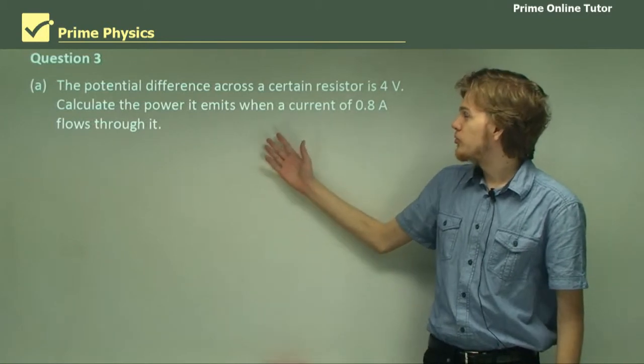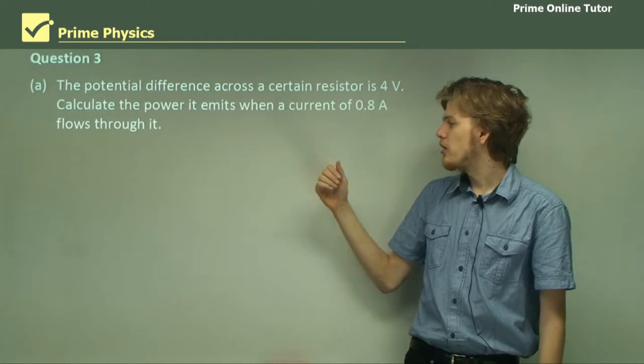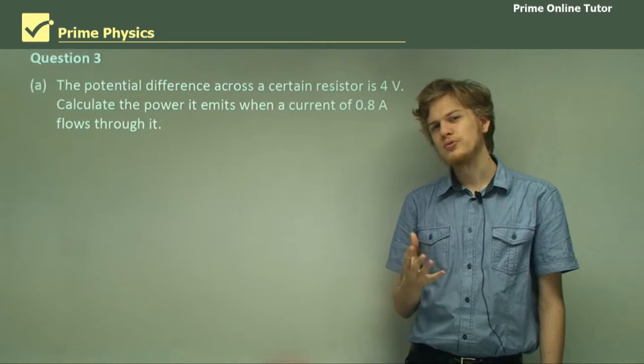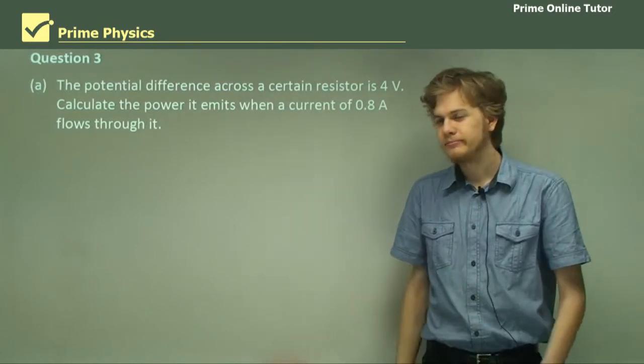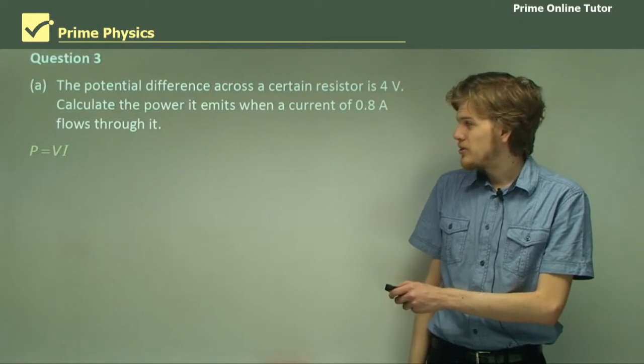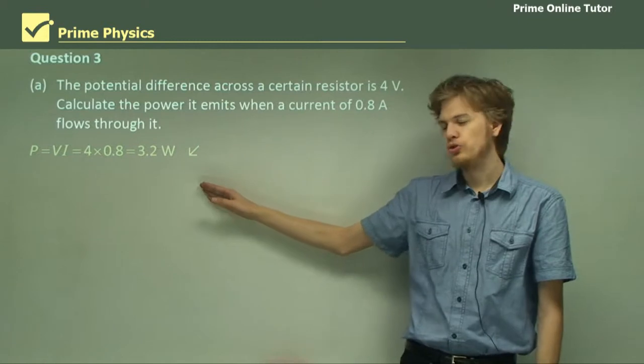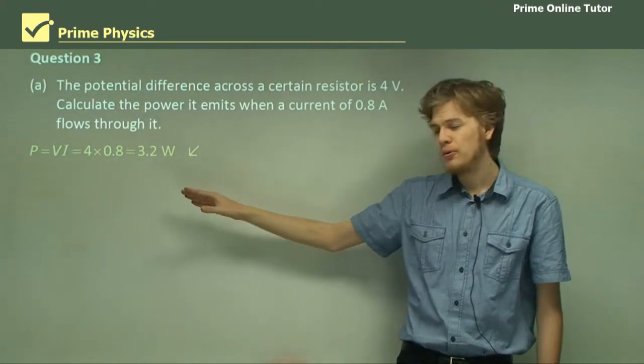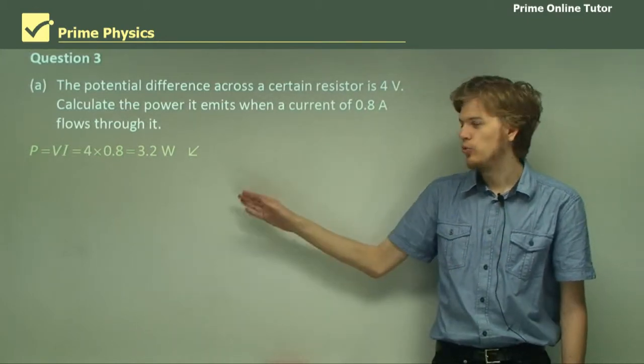Question 3. The potential difference across a certain resistor is 4 volts. Calculate the power it emits when a current of 0.8 amps flows through it. So which of those previous three equations shall we use for this? We know the voltage, and we know the current. So we should use P equals VI. Multiplying these together, 4 times 0.8, we end up with 3.2 watts. Remember to use the right units. The units of power are watts. 1 amp times 1 volt equals 1 watt.